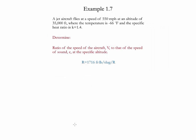Example 1.7. In this example, a jet aircraft flies at a speed of 550 miles per hour at an altitude of 35,000 feet. At this location, the temperature is negative 66 Fahrenheit and the specific heat ratio is equal to 1.4.